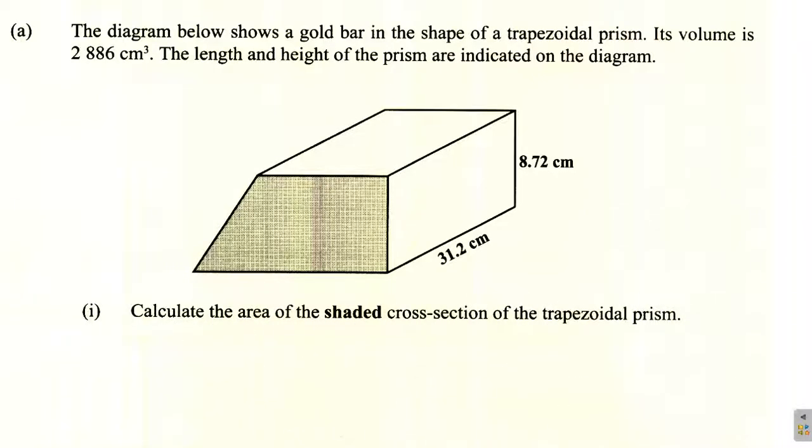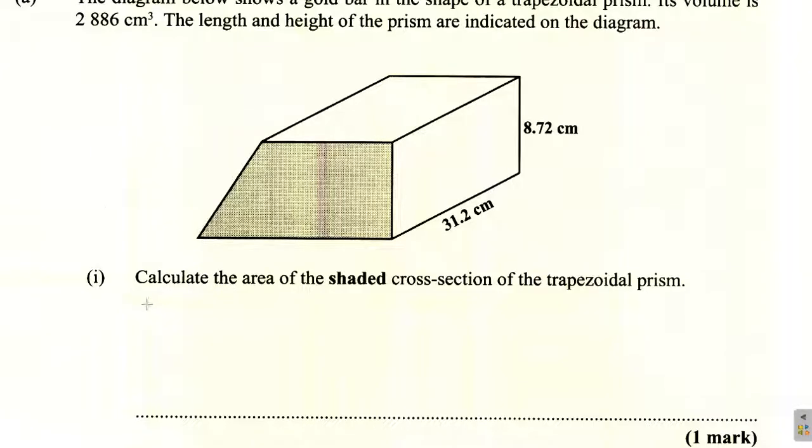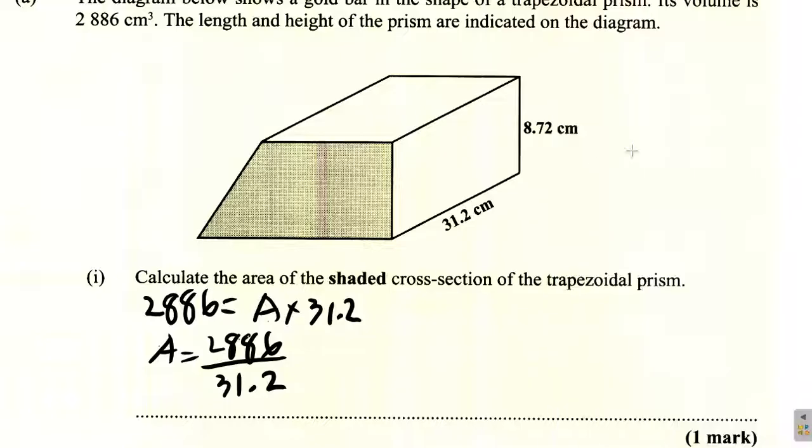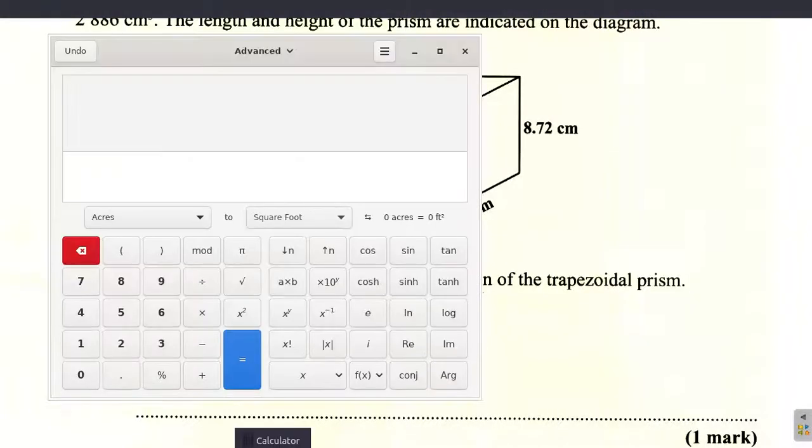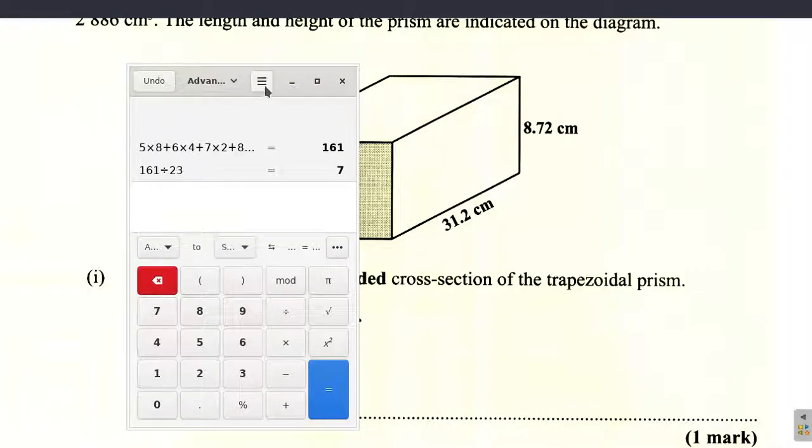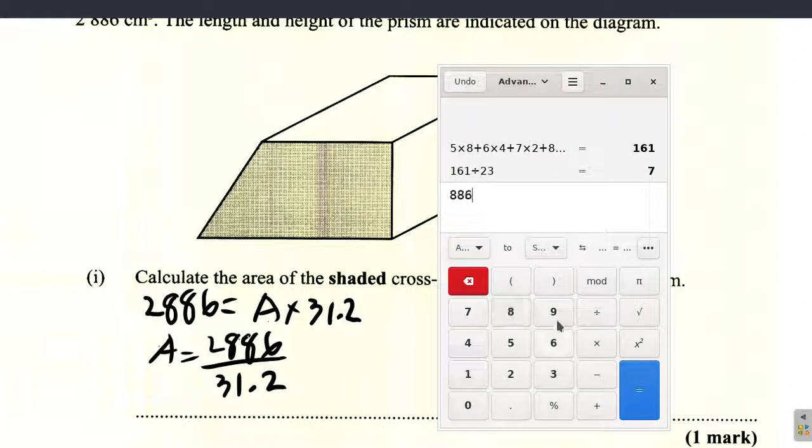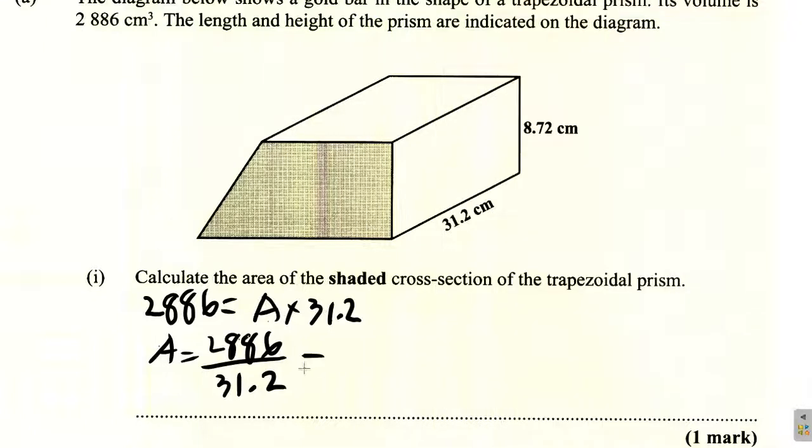So, I'm calculating the shaded area here. The volume, 2886, is equal to the area times 31.2. So the area is 2886 over 31.2. Let's do the calculation. 2886 over 31.2 gives us 92.5. So we have 92.5 centimeters squared. That's the area, the cross-sectional area.